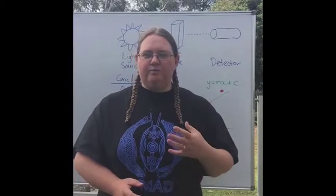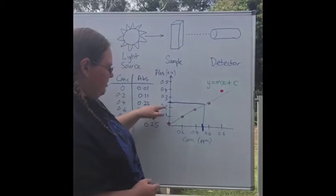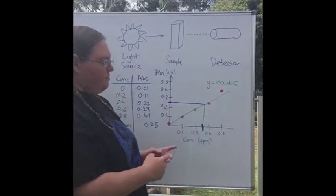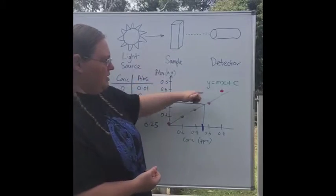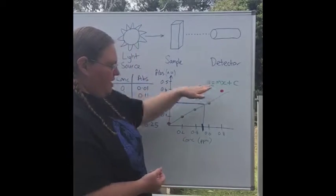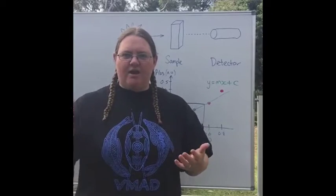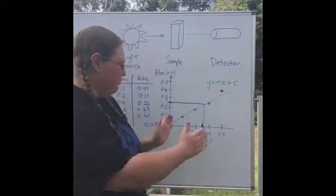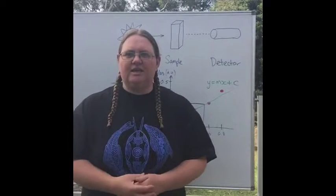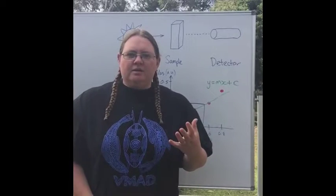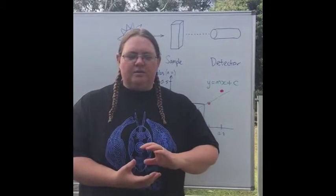You do your dilution calculation to find out the concentration in your original solution. Why would you have diluted? If you had gotten a value outside of the calibration range, you have to dilute your sample so that it's within that calibration concentration range in order to get an accurate result.